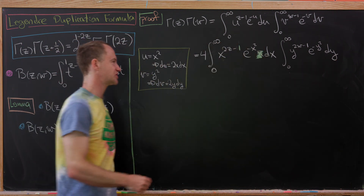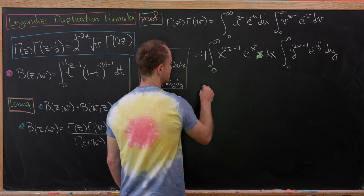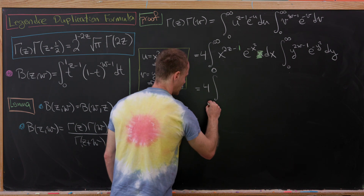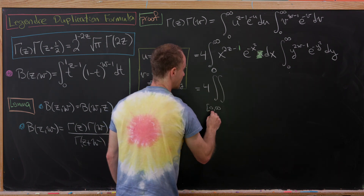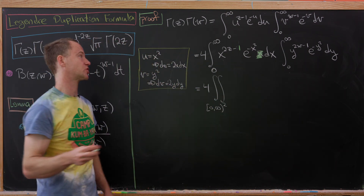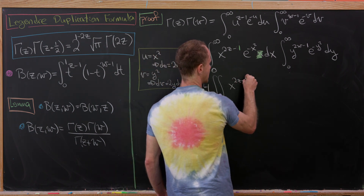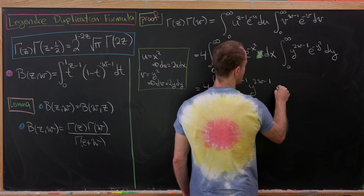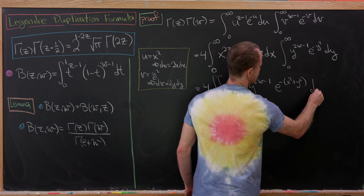Now let's push these together into a single double integral. We'll have 4 times the double integral over the first quadrant — that's the region [0,∞)² — of x^(2z-1) times y^(2w-1) times e^(-(x²+y²)) dA.